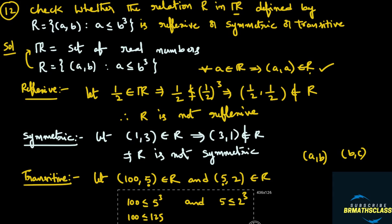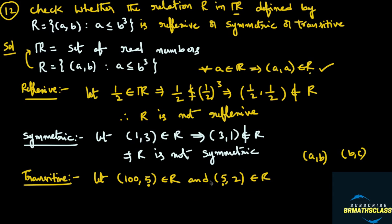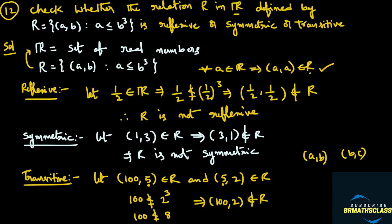Now we need to check whether the ordered pair (a, c), that is (100, 2), is in the relation. Check if 100 is less than or equal to 2 cube, which is 8. Is 100 less than or equal to 8? No — 100 is not less than or equal to 8. That means the ordered pair (100, 2) does not belong to the relation. So we have (a, b) and (b, c) in R but (a, c) not in R — it fails to satisfy the transitive property. Therefore, the relation R is not transitive.